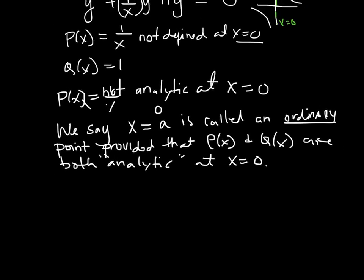So since P and Q are not analytic, or actually since just one of them, thus, provided that P and Q are both analytic, well, they're not both analytic, so thus we say x = 0 is a singular point.